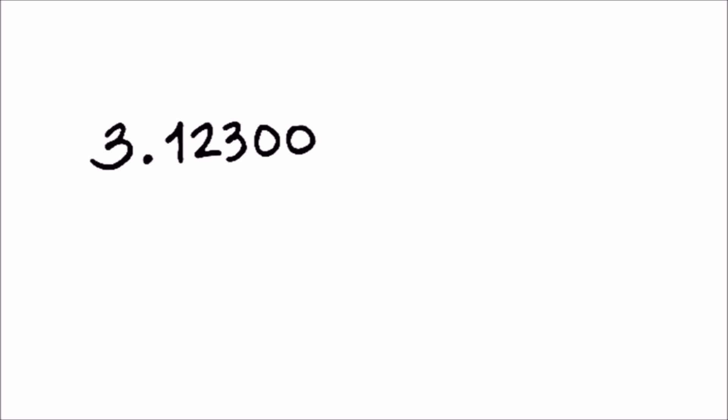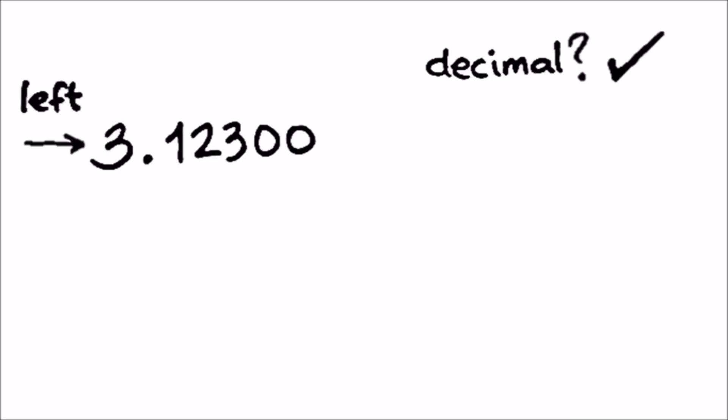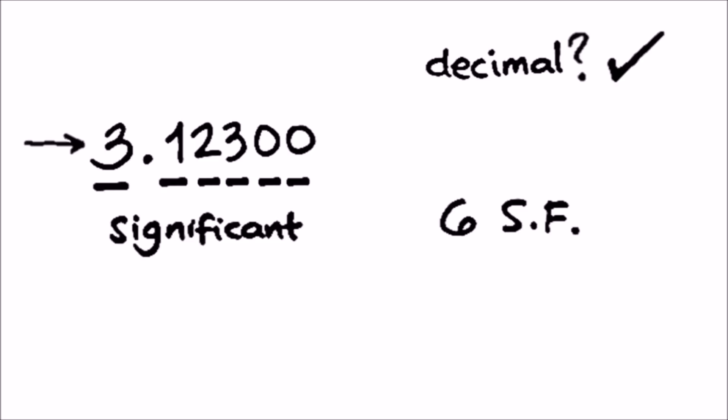So let's have our first example: 3.12300. Is there a decimal point? Yes. So we start from the left and move to the right. We hit our first non-zero digit, that's 3. So that means everything to the right of it is all significant, including the 3. So here there are 6 significant figures.